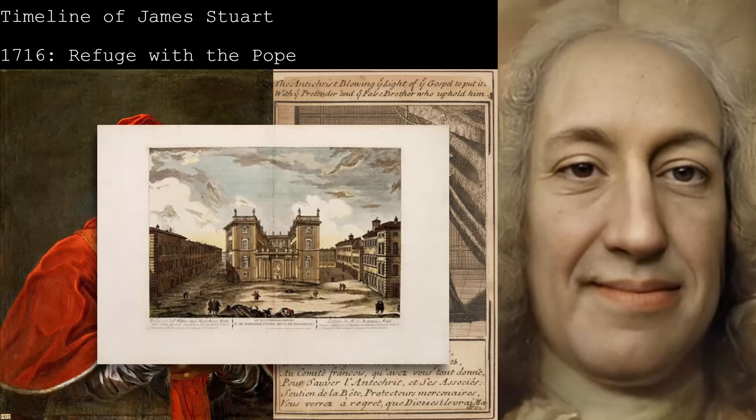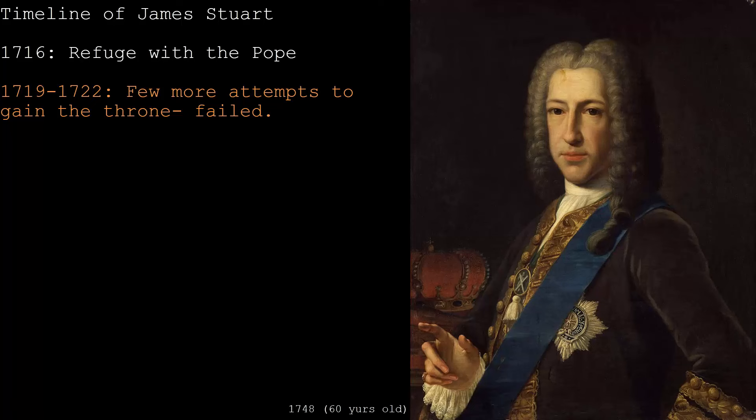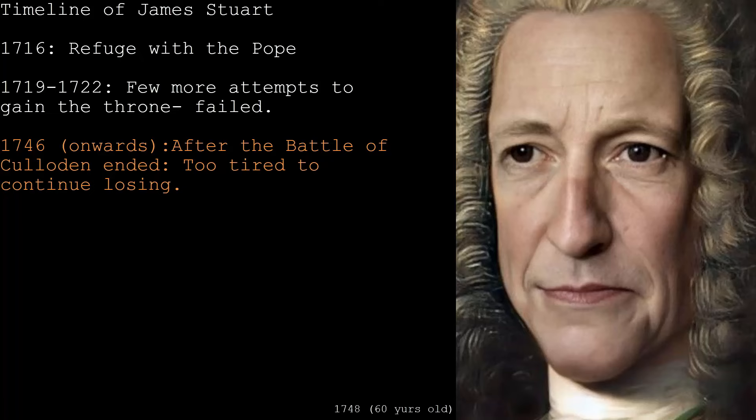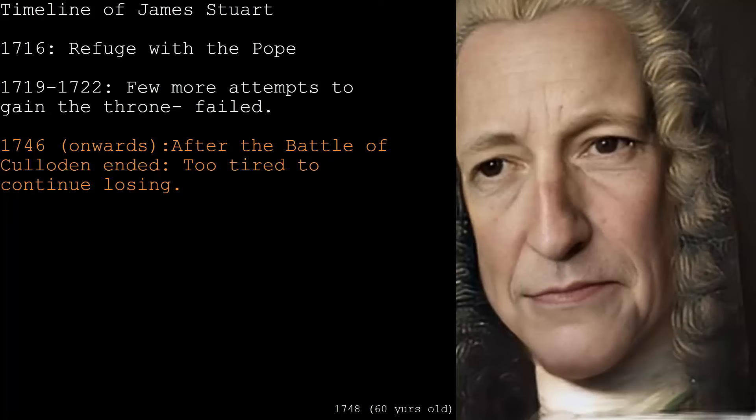Between 1719 and 1722, around four more attempts were tried to attain the throne, which all ended in failure. And from 1746, there were no more plots to restore James in England — ideas, yes, but nothing really solidified. His hopes would forever be crushed as he realized perhaps he would never be on the throne.